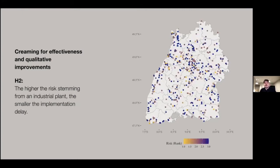Another pattern we could observe in terms of coping is creaming for effectiveness or qualitative improvement. Here we would expect implementers to focus on high-risk cases, because the policy requires the inspection of risky industrial sites. We would expect them to focus on those that pose the highest risk. How exactly that is measured, I'll tell you in a second, but we have good data on the actual risk imposed by a site. Our second hypothesis would be the higher the risk stemming from an industrial plant, the smaller the implementation delay should be.